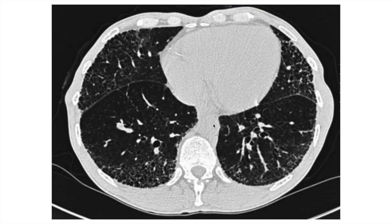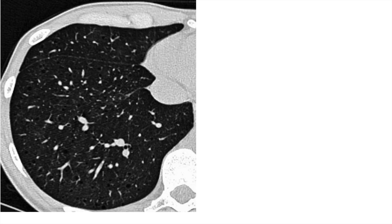What we see here is honeycombing in a cystic lung change, which is found in advanced lung fibrosis, usually seen in cases of interstitial lung disease. This is lymphangiomatosis with diffuse thin-walled round cystic lesions — there are a lot of cysts which are round and have a thin wall.